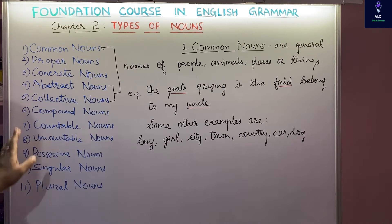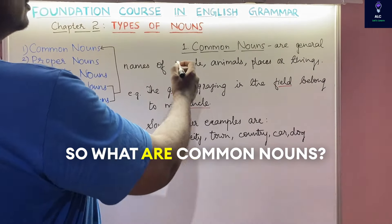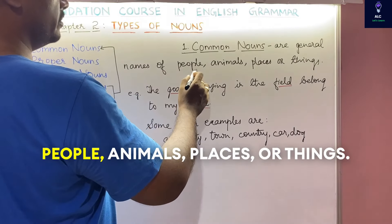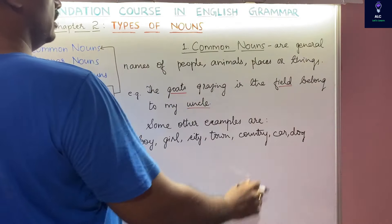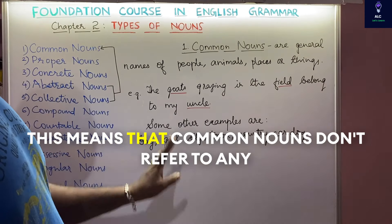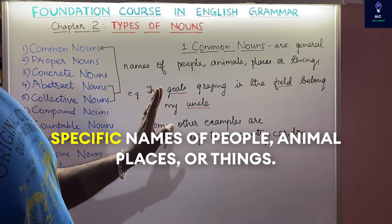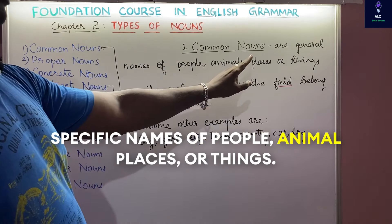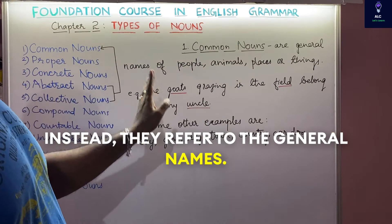Let us begin with common nouns. Common nouns are general names of people, animals, places, or things. This means that common nouns don't refer to any specific names of people, animals, places, or things. Instead, they refer to the general names.